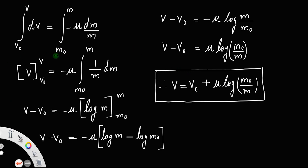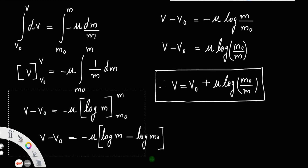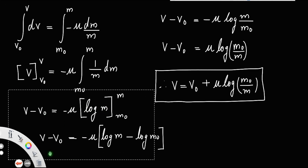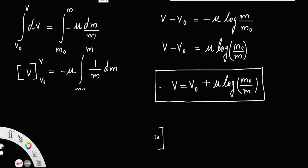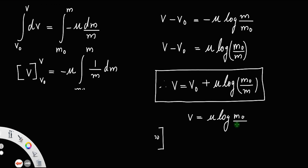If the initial velocity v0 is zero, then the equation simplifies to v equals u·log(m0/m).